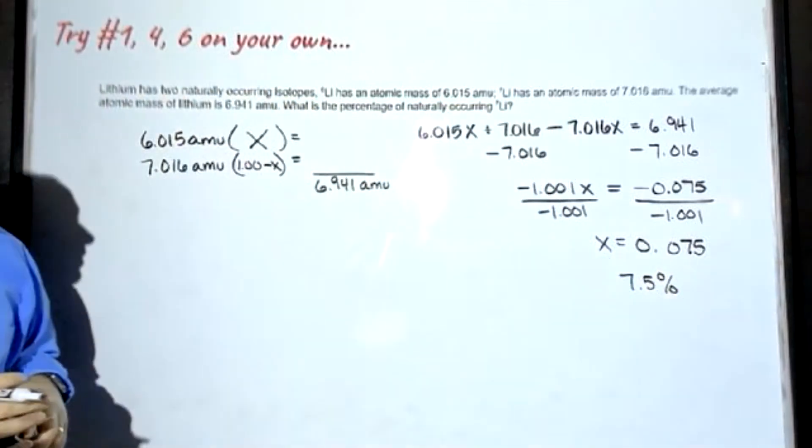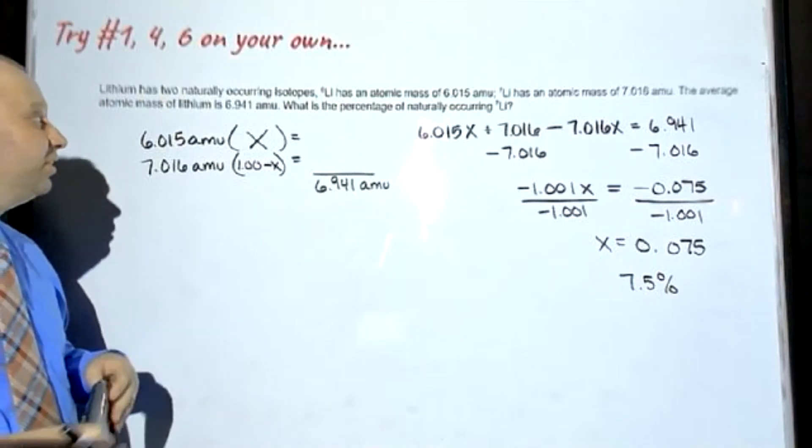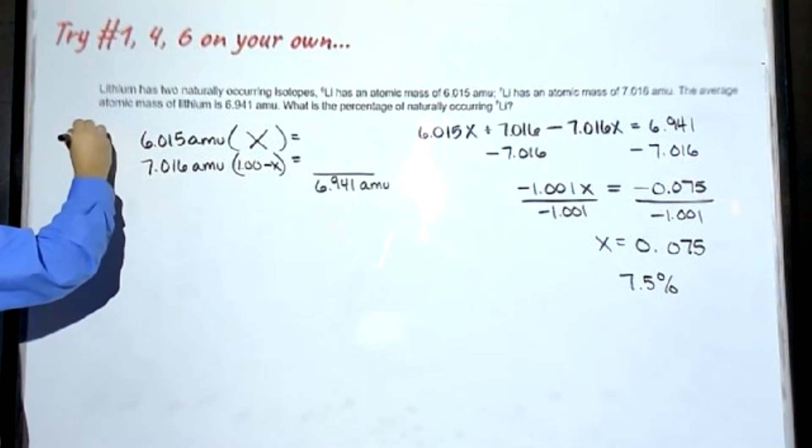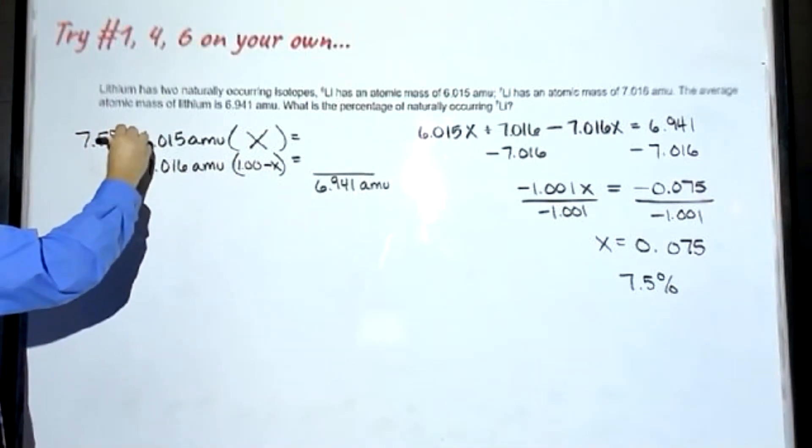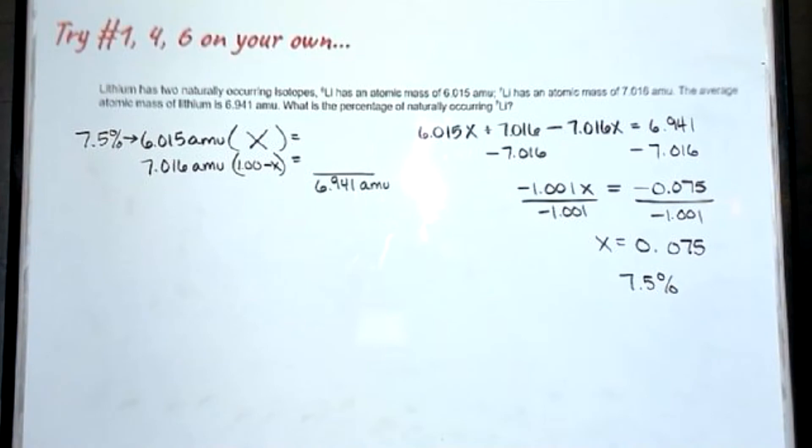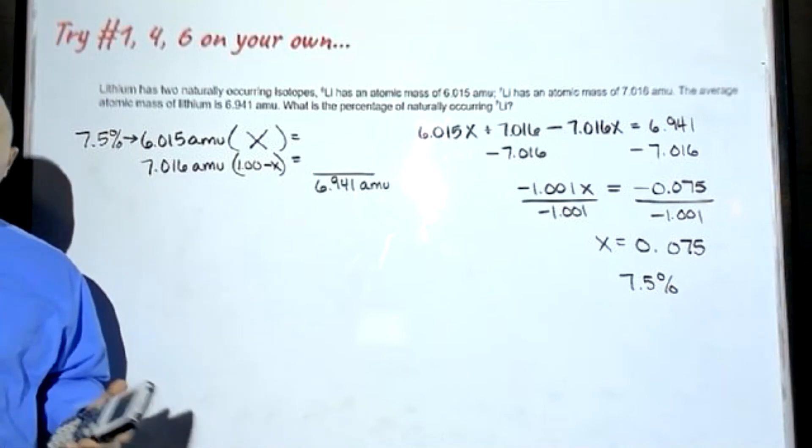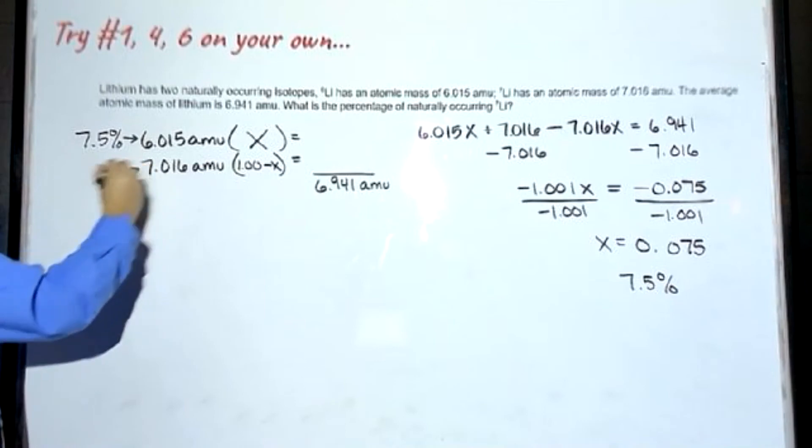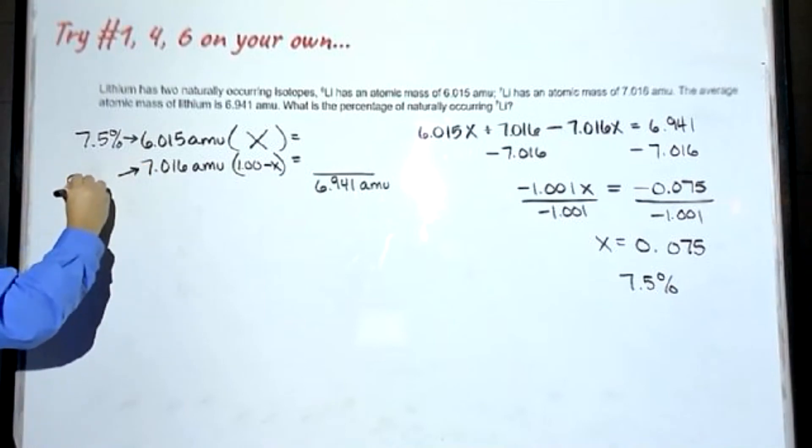That turns out to be 7.5%. So my value for this one is 7.5%. The part that's missing to get to 100 is 92.5%.